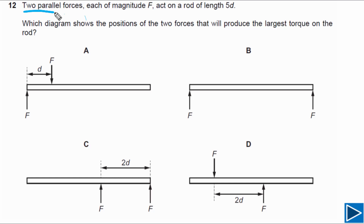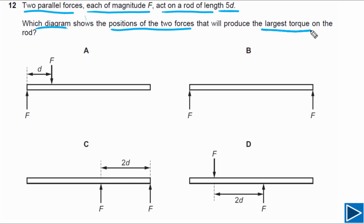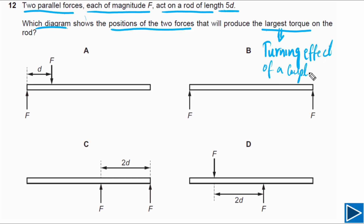For question number 12, two parallel forces each of magnitude F act on a rod of length 5t. The question asks which diagram shows the positions of the two forces that produce the largest torque on the rod. Torque is the turning effect of a couple, and is equal to the magnitude of one force multiplied by the perpendicular distance between the two forces.